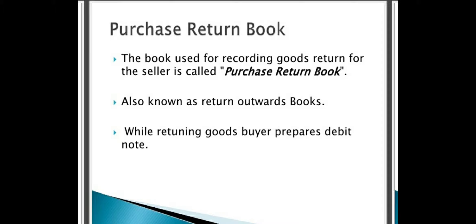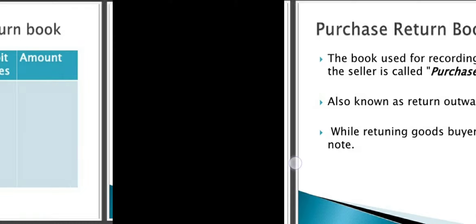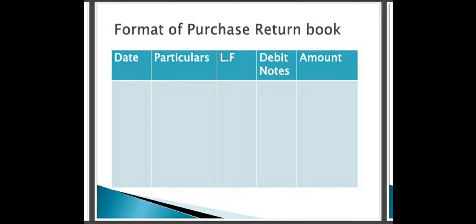While returning goods, the buyer prepares a debit note. The format of the purchase return book contains the same structure we have discussed: date, particulars, ledger folio, debit note number, and amount. All those transactions must be written in chronological order.